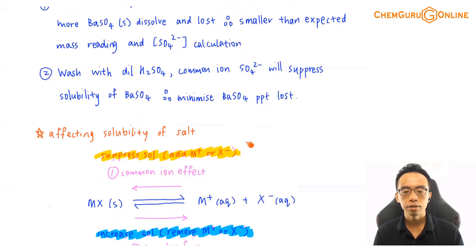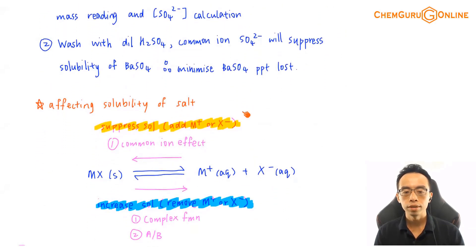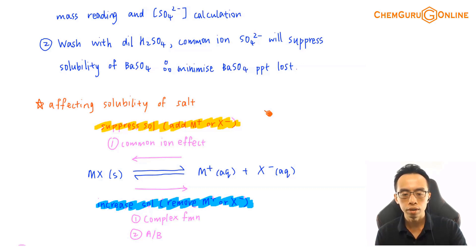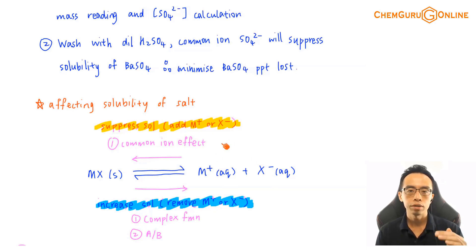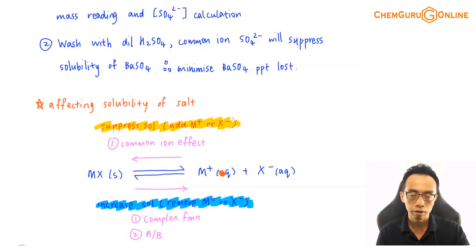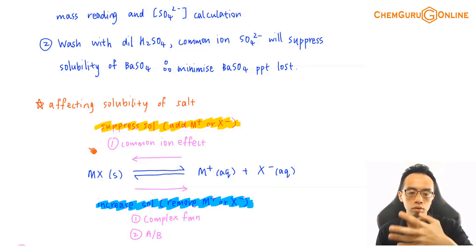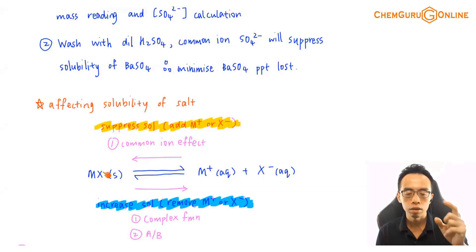What we have done so far is talk about the common ion effect. The common ion effect is one way to affect the solubility of a sparingly soluble salt by suppressing or lowering its solubility. If I have the dissociation of a salt, how do I suppress solubility? I add a common ion — I either increase the concentration of the cation or the anion. According to Le Chatelier's principle, when the concentration of a product goes up, the position of equilibrium shifts towards the left, so less salt will dissolve and solubility goes down.